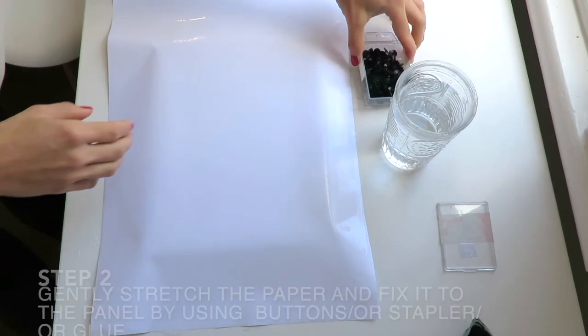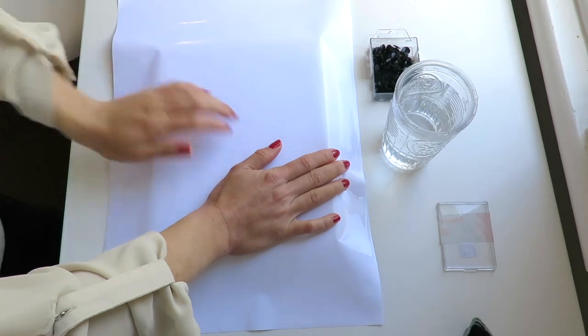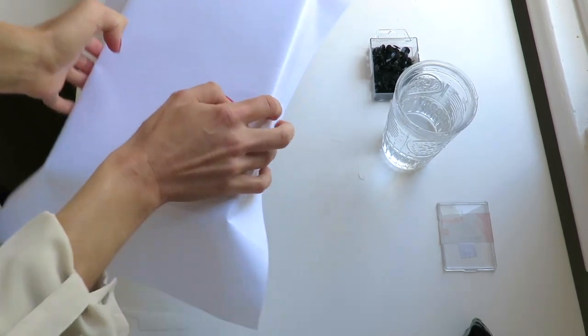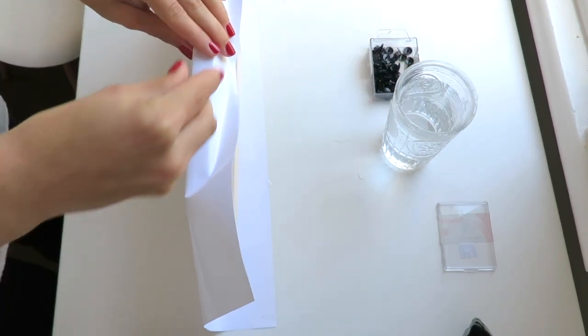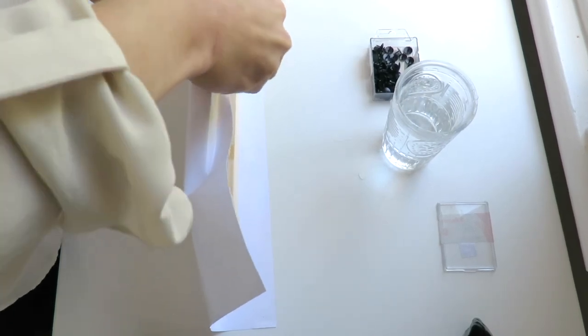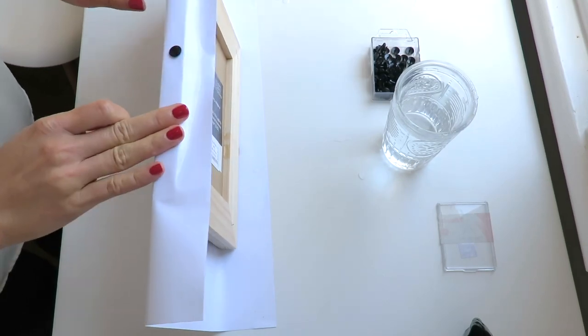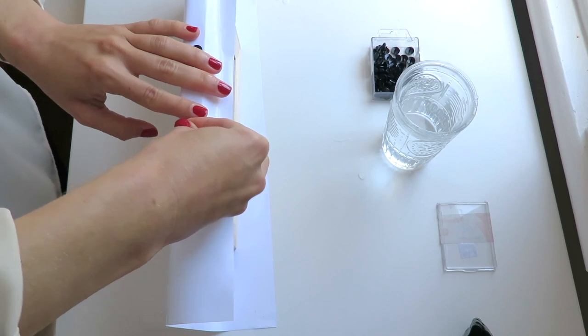When your paper is nice and evenly wet, it's time to start fixing it to the wood panel. So I love to begin and I recommend you to start with the longest side of your panel. Of course, if it's not a square panel, then it doesn't really matter. Another hint is to start with the center and then proceed to the edges.